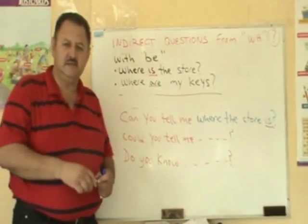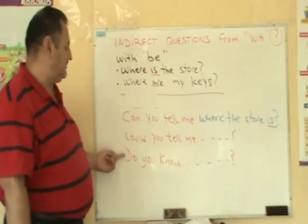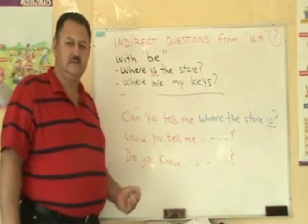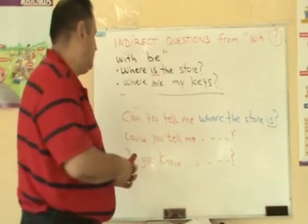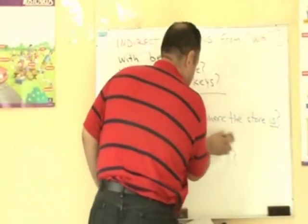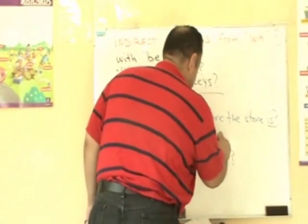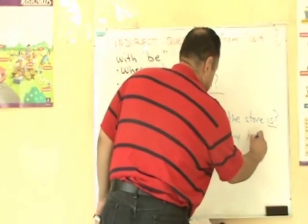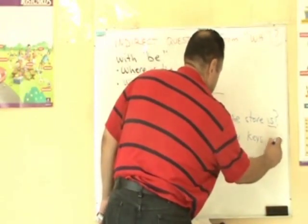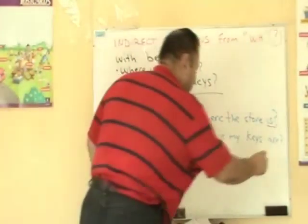Can you tell me where the store is. And the same thing happens with the other expressions: "Could you tell me where the store is?" "Do you know where the store is?" In plural it's the same thing: "Where are my keys?" becomes "Can you tell me where my keys are?" Notice that the verb to be went to the end again.